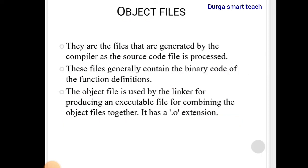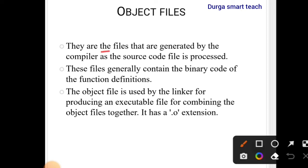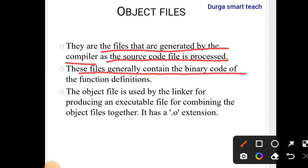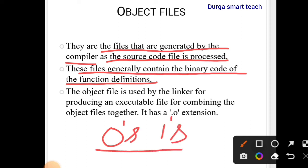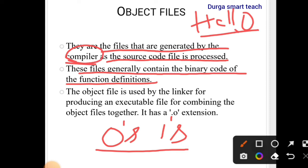Next is the object file. Object files are generated by the compiler as the source code file is processed. Whenever a .c source file is processed, the compiler converts it into an object file. These files generally contain binary codes of the function definitions — binary codes are zeros and ones, which is what the computer understands.